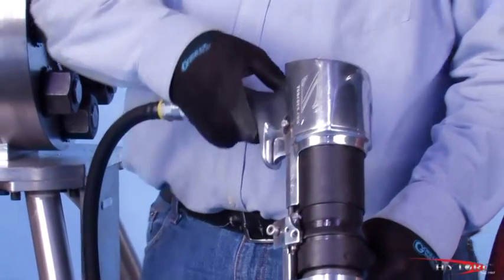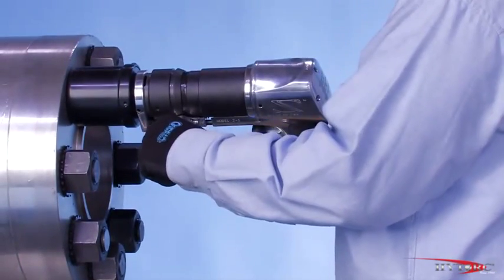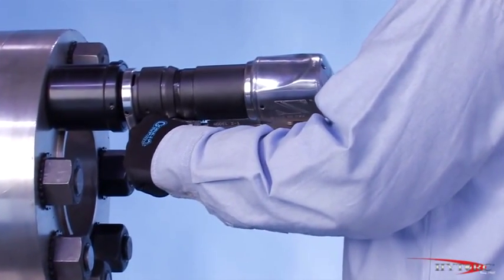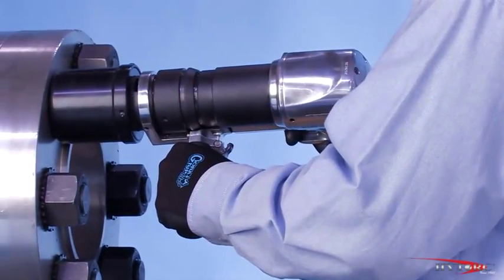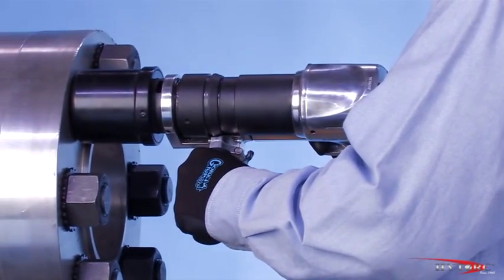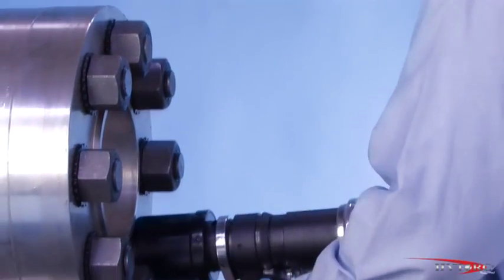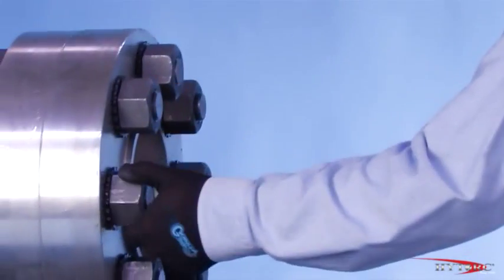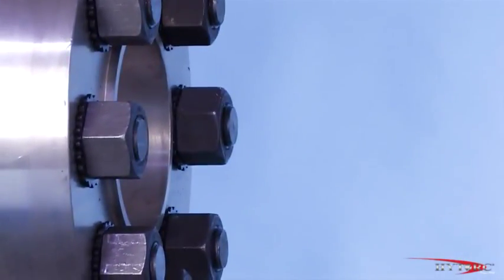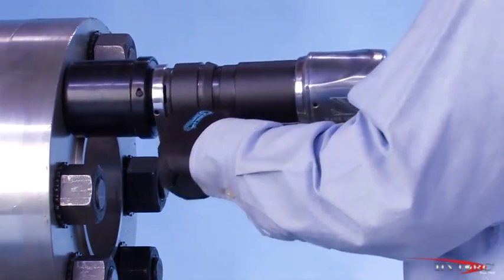Apply the wrench and position the outer reaction socket onto the splined washer. Pull the speed selection arm upward toward the operator. Start the tool and proceed to loosen all the nuts until they can be turned by hand. Shift the arm to the high speed position and proceed to run off the nuts.